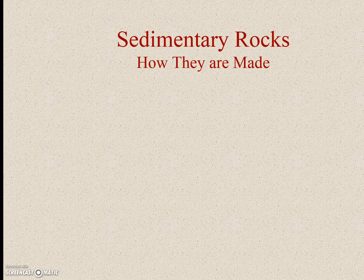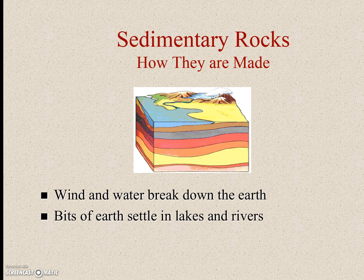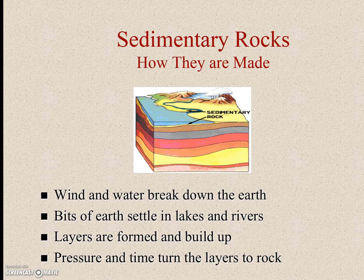So sedimentary rocks — how are they made? They are made when wind and water break down the earth, which we call weathering and sometimes erosion. Bits of earth settle in lakes and rivers, and layers are formed and build up on top of one another, so then you get a sedimentary rock. Pressure and time turn the layers into rocks, so there is some pressure involved in making sedimentary rocks too.